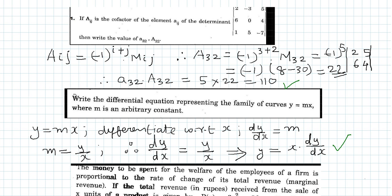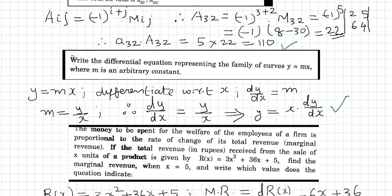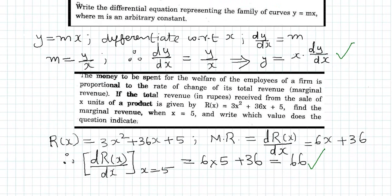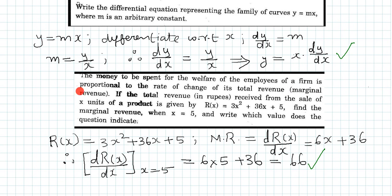Now let us look at problem number 3. The total revenue is given as a function of x, where x is the units sold: R(x) = 3x² + 36x + 5. The marginal revenue is nothing but the rate of change of total revenue, so we have to differentiate the total revenue function with respect to x.